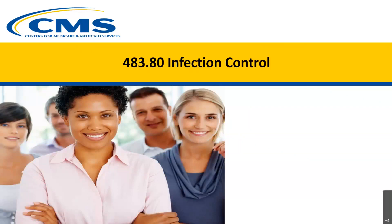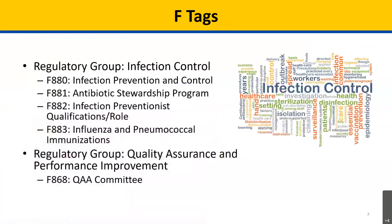Today, I am discussing the significant changes to the infection control portion of the nursing home interpretive guidance. I will discuss the following four F-tags found under the infection control regulatory grouping: F-880, F-881, F-882, and F-883. I will also discuss the infection preventionist, or IP's, role on the Quality Assessment and Assurance, or QAA, Committee at F-868.